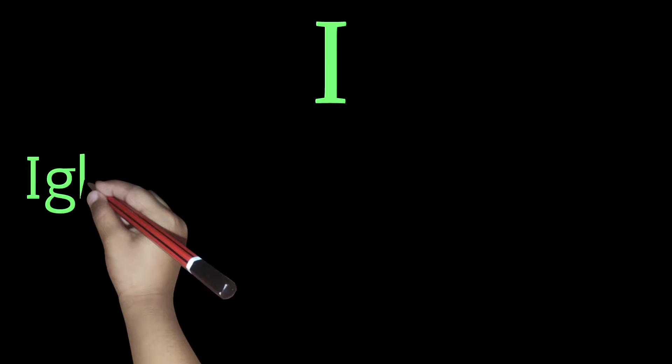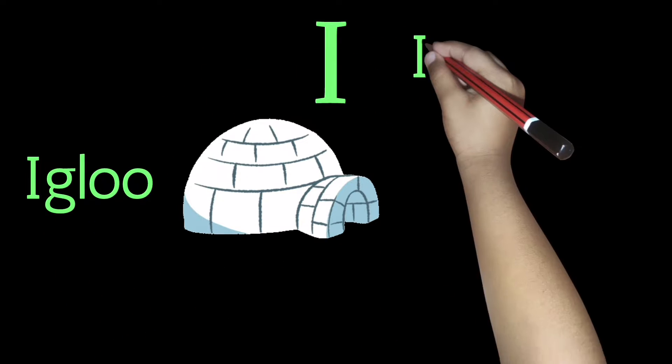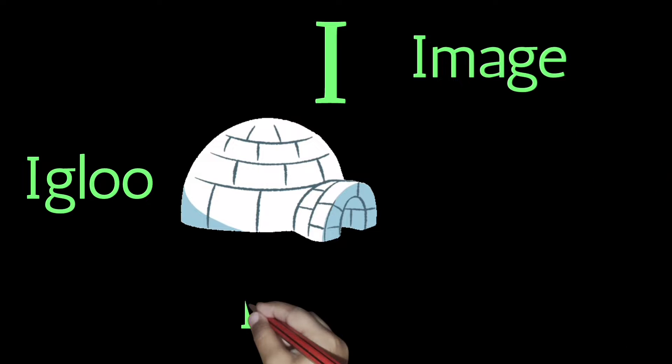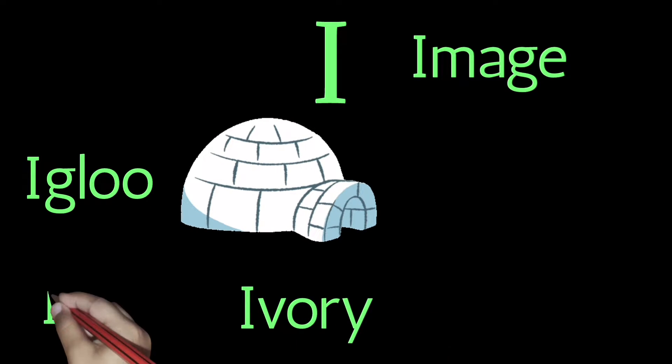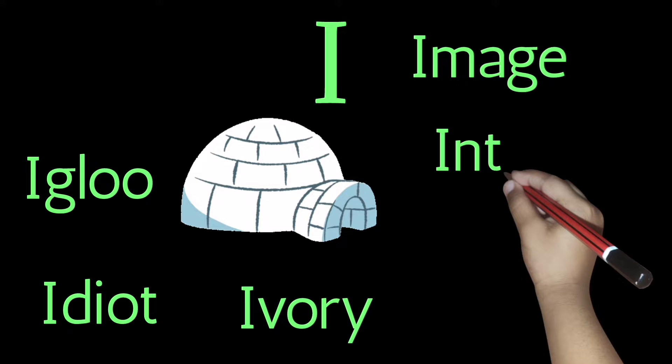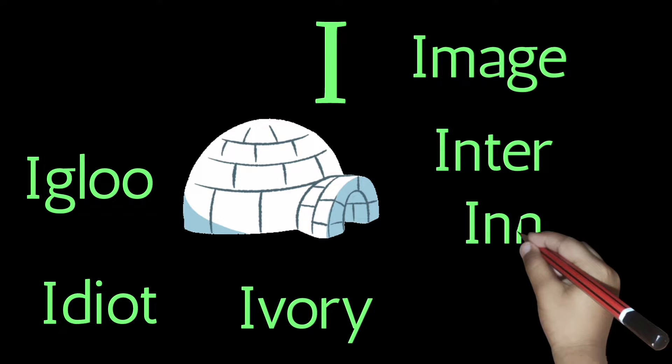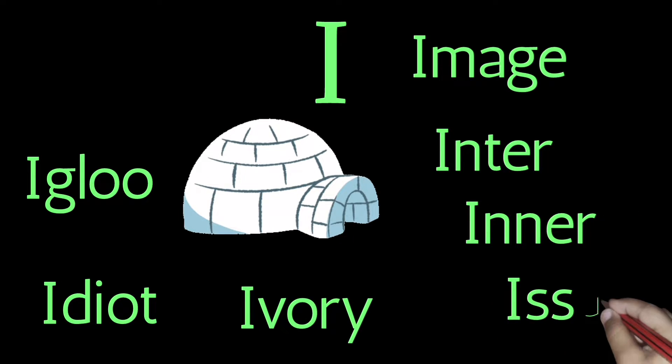I. I for igloo, I for image, I for ivory, I for idiot, I for inter, I for inner, I for issue.